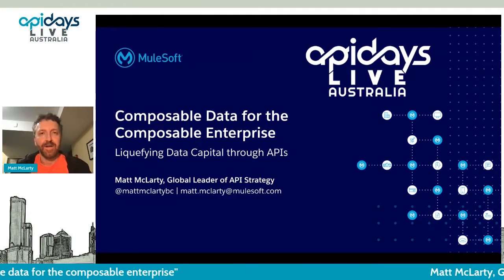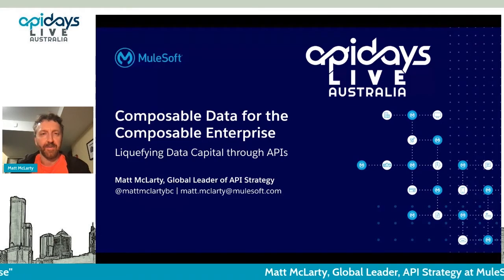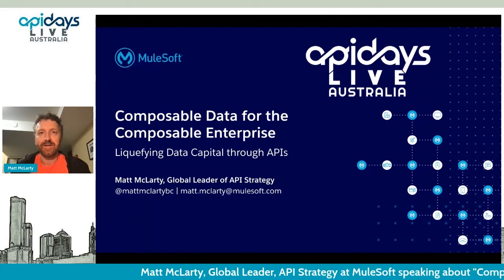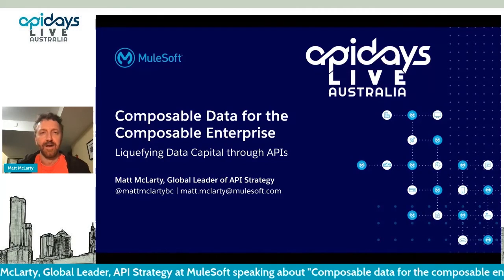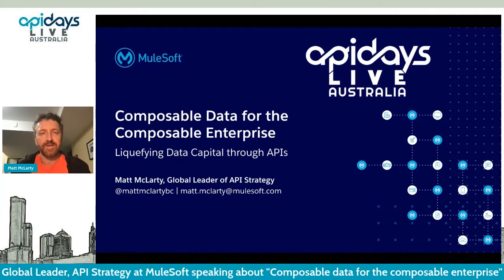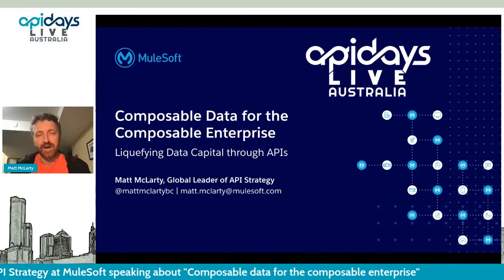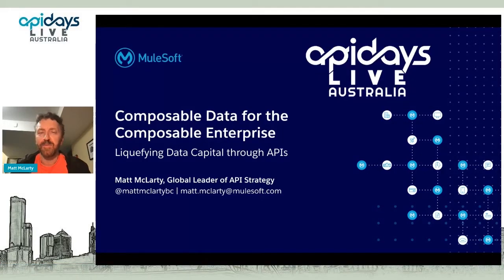It is a super hot topic right now. In my job as global leader of API strategy, I'm working with a lot of big organizations all around the world, and for the past 18 months I've been zeroing in on this intersection of data strategy and API strategy. I came from a place where I felt like, why are these different?